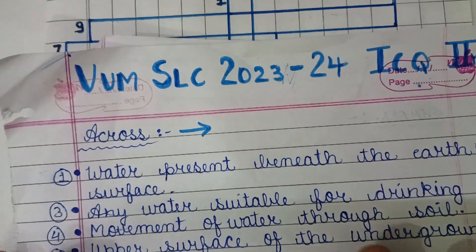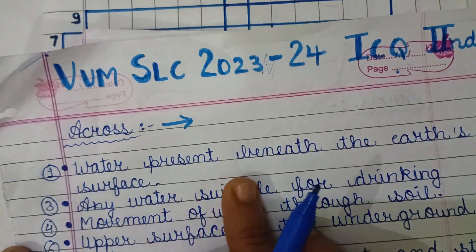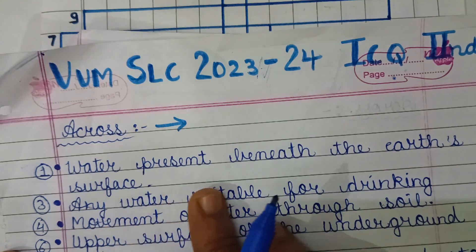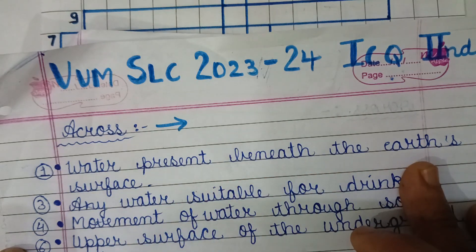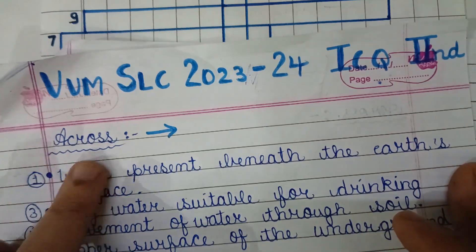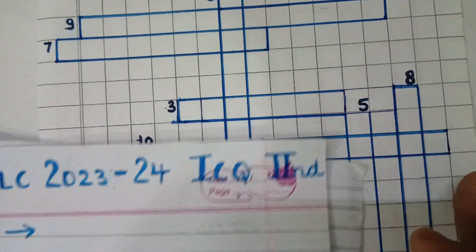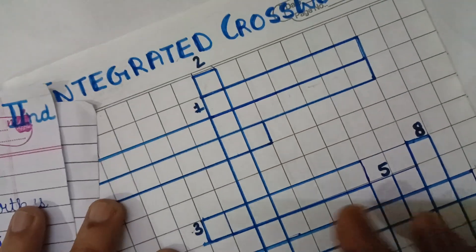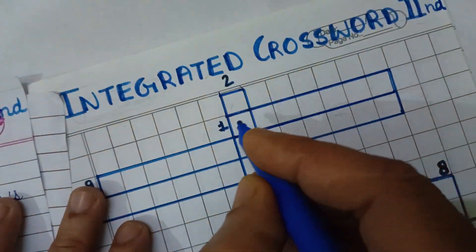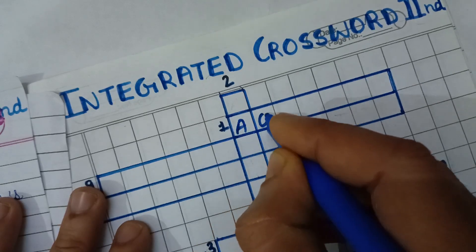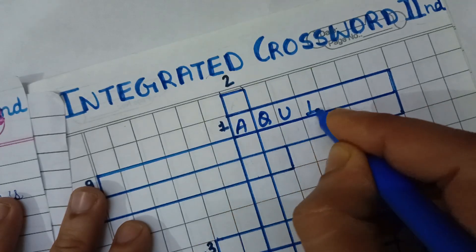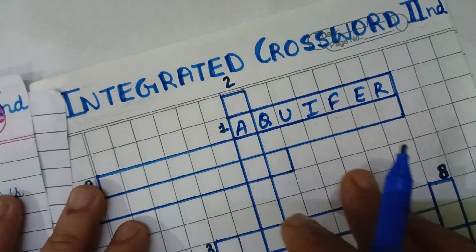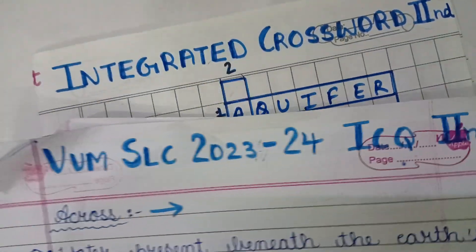First question: the water present beneath the earth's surface is known as — filled in the first column across — these are known as aquifer.